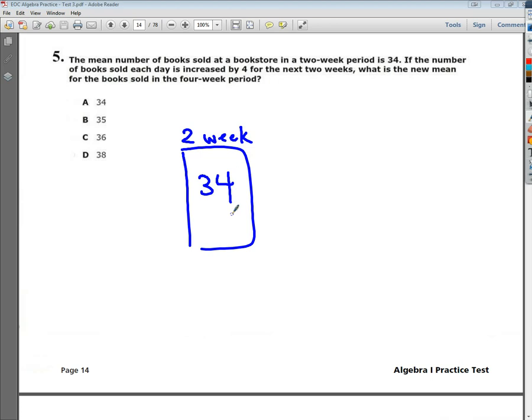In the next section, it says if the number of books sold each day is increased by four for the next two weeks, that is the part where you increase the central tendency measure. So instead of having 34, in my next two-week period, my average is 34 plus 4, or 38. So this is two-week period 2.